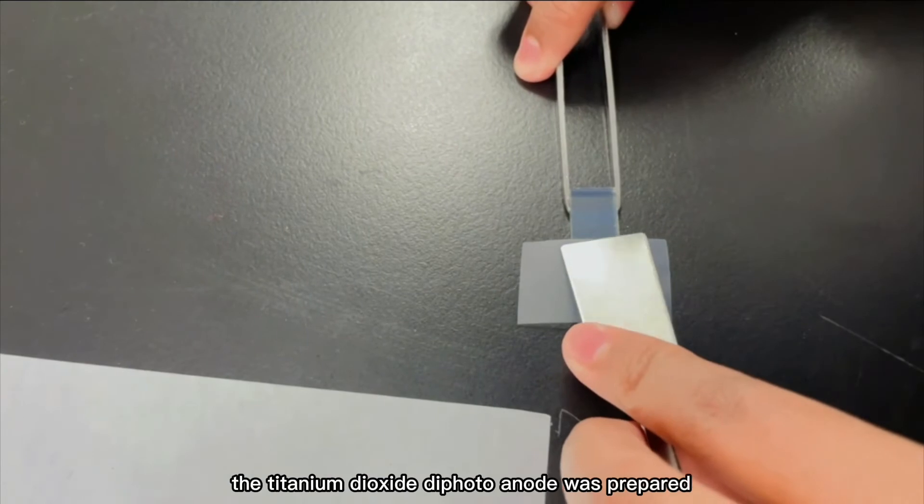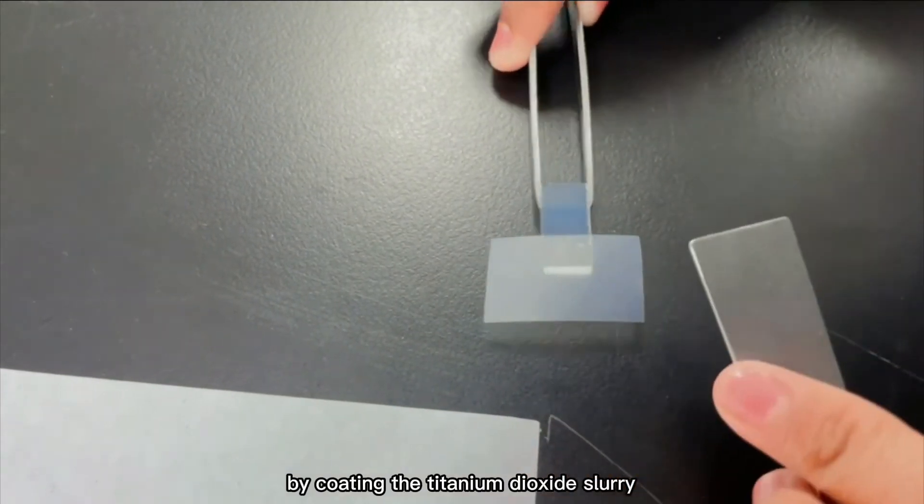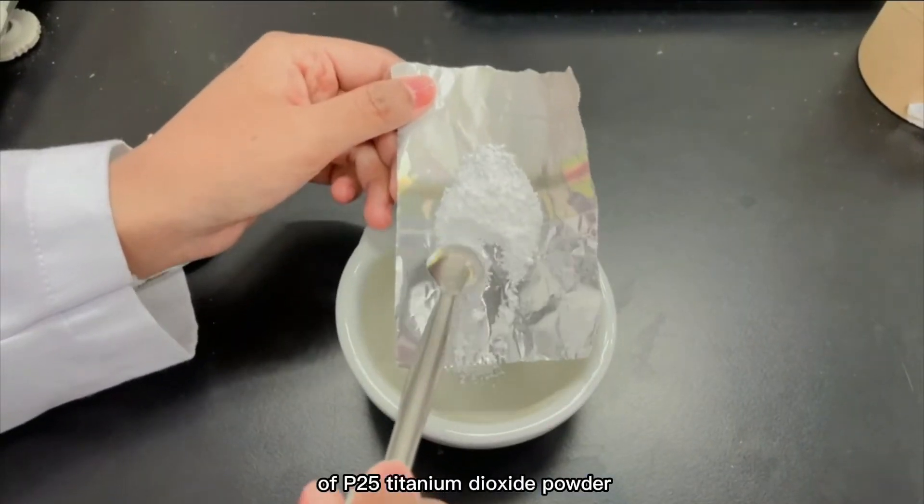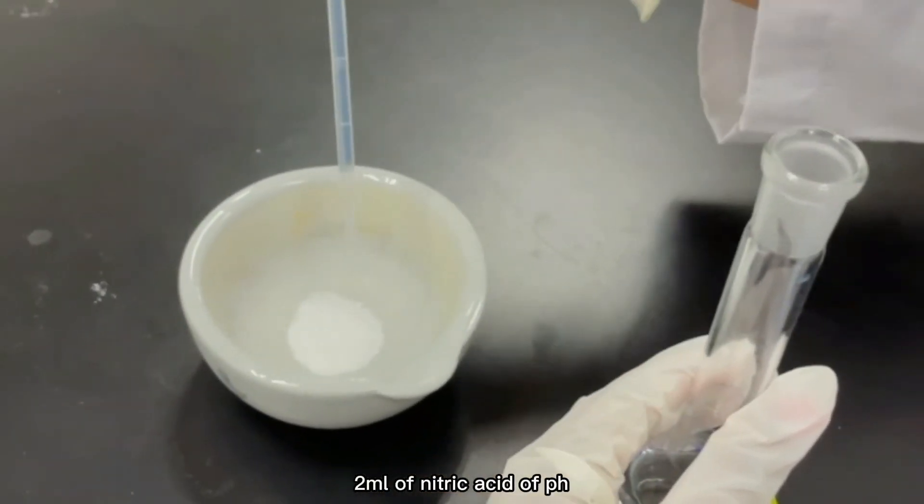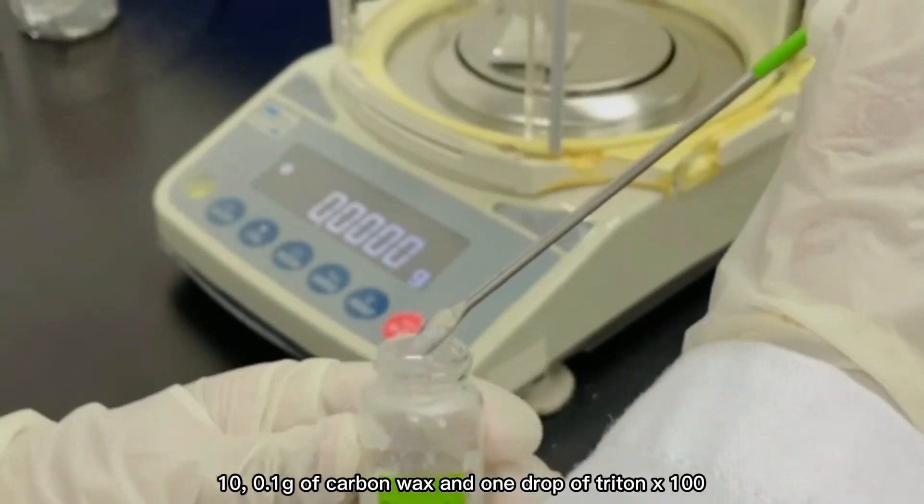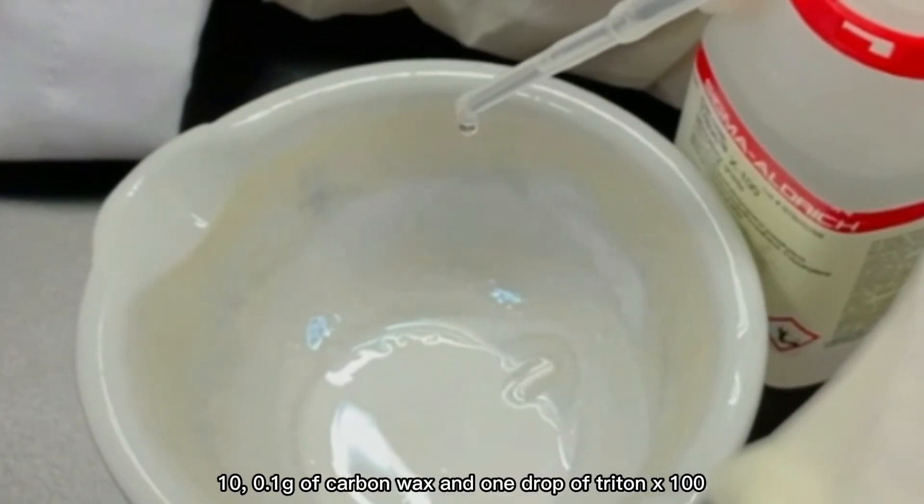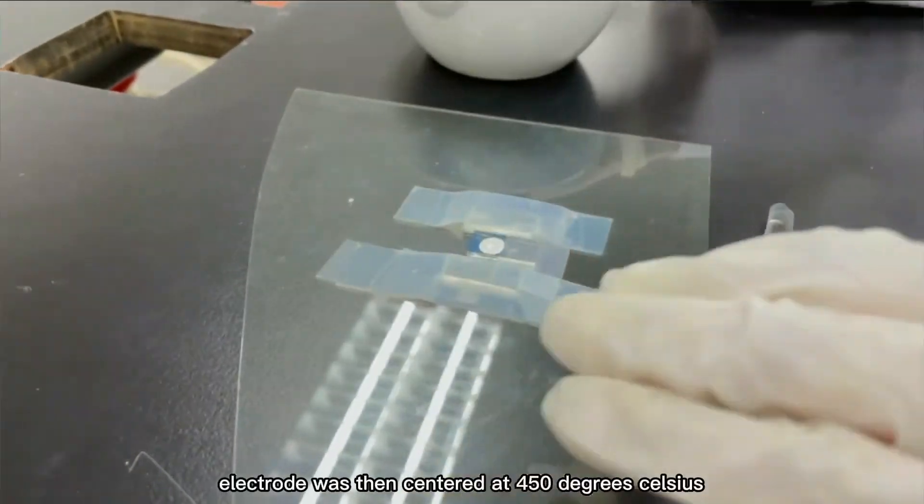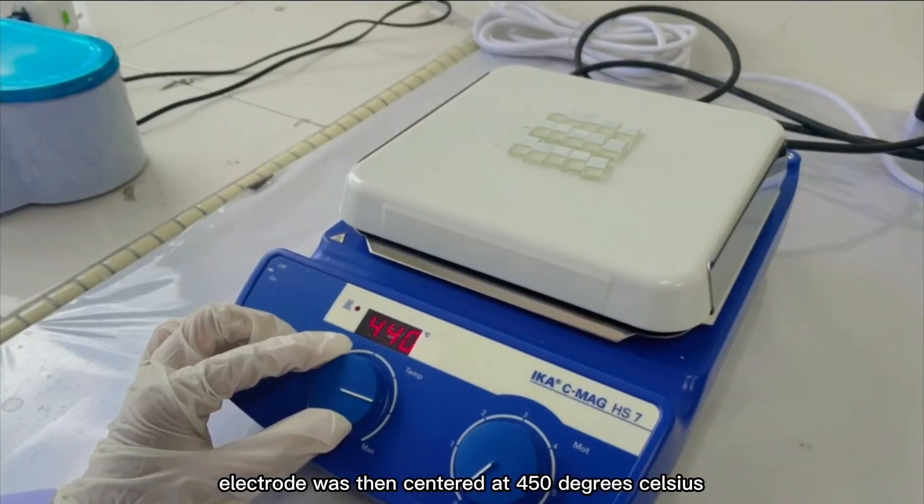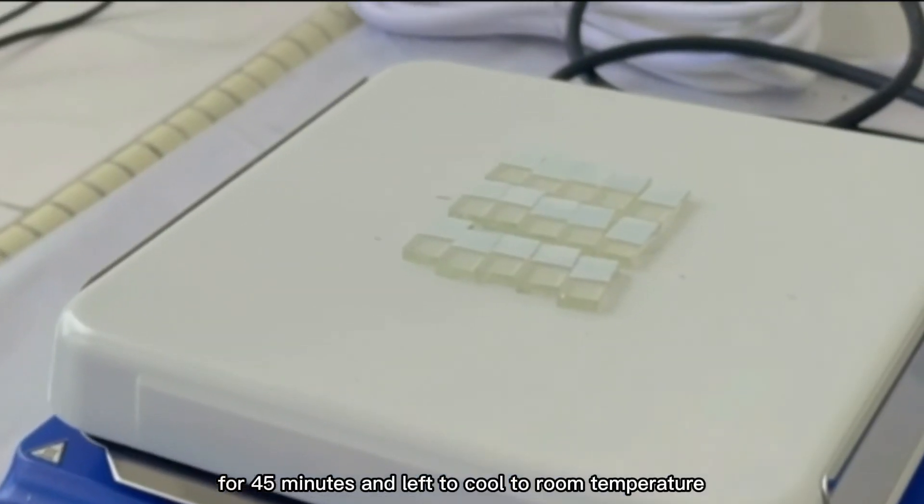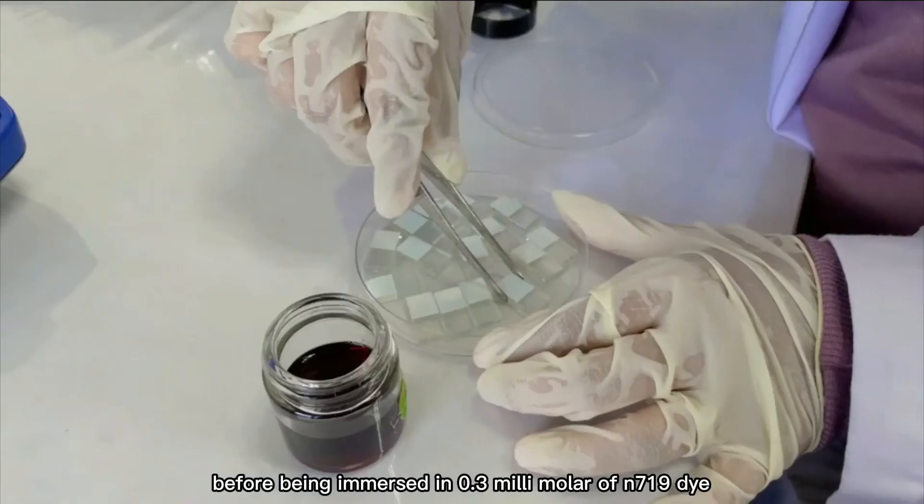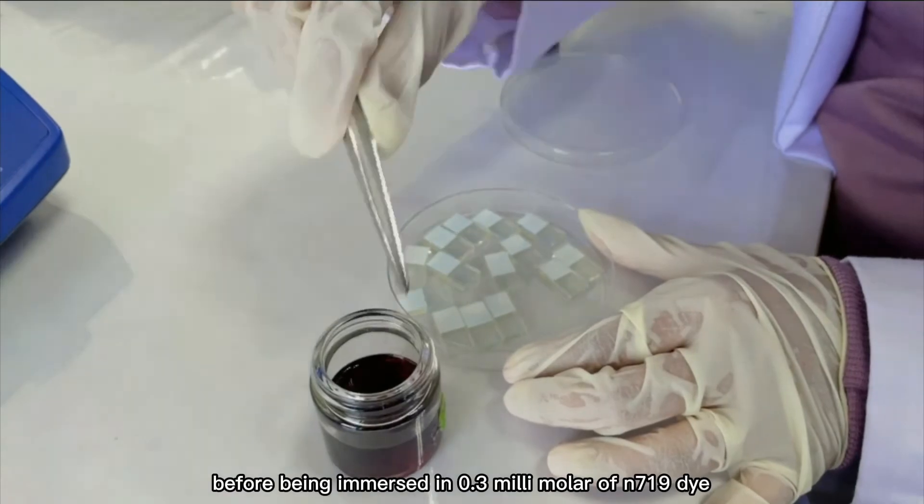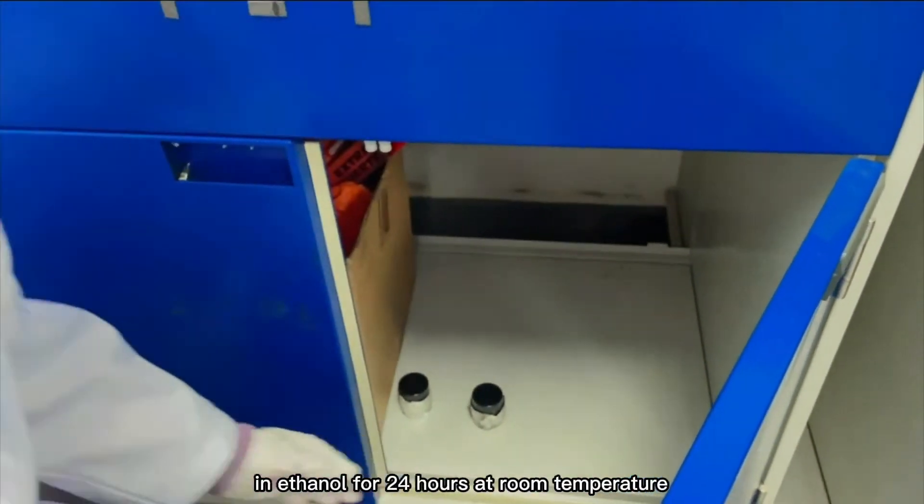The titanium dioxide dye photoanode was prepared by coating the titanium dioxide slurry, prepared by grinding 0.5 grams of P25 titanium dioxide powder, 2 ml of nitric acid of pH 1.0, 0.1 grams of carbon wax and 1 drop of Triton X100 using the doctor blade method. The titanium dioxide coated electrode was then sintered at 450 degrees Celsius for 45 minutes and left to cool to room temperature before being immersed in 0.3 millimolar of N719 dye in ethanol for 24 hours at room temperature.